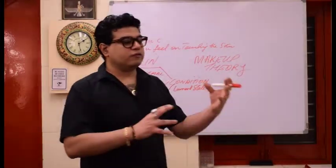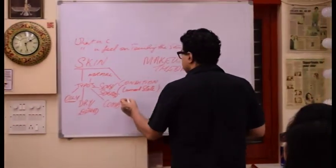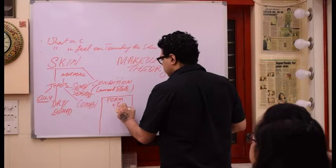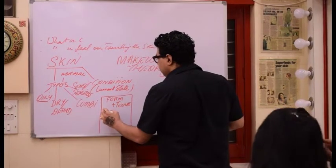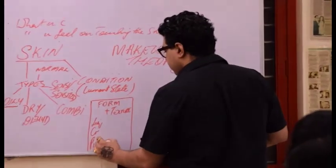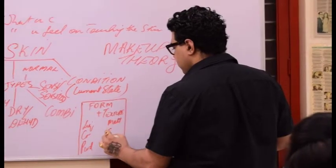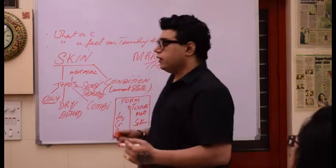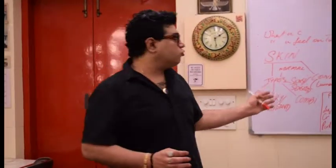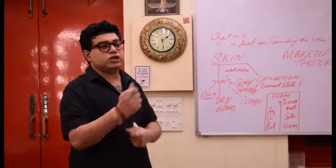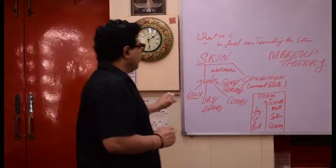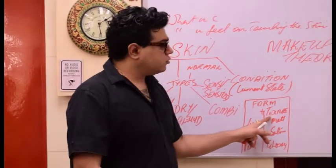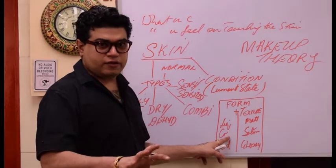As a makeup artist, you have to think of the problems and also think of the solutions. Your solutions will come from form and texture. We cannot change skin. The only way you are going to be able to solve it as a makeup artist is with two things: form and texture. So if it is oily, I always want to keep it matte. I also know that the makeup will come off faster, so I might want to use a cream so it really locks in and stays there.